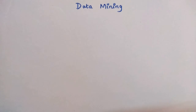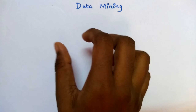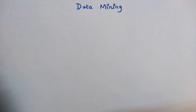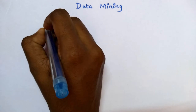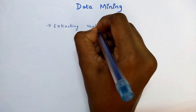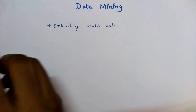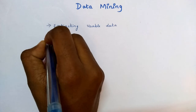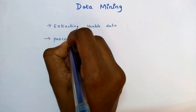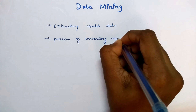Combining these two we get the definition of data mining. In data mining we are using raw data — we only have raw data — and using this raw data we are going to convert it into useful information. The first step is extracting: we are going to extract the usable data from all the data. Not every data will be used; some particular data we are going to extract.